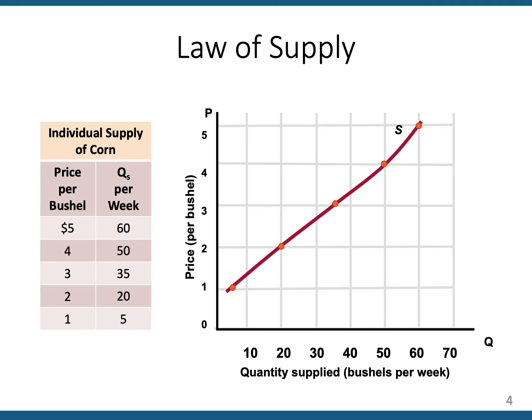So here is, on the left, a table of values — that is a supply schedule. This is the same market for corn that we discussed earlier, except this is one individual supplier, one seller of corn in this market. Think of this as maybe being the market for corn in downtown Nanticoke at the farmer's market. If the market price happens to be $3, this one supplier will bring 35 bushels to market. If the price were to rise to $4, this one seller would bring 50 bushels to market — so that's an increase, which is the law of supply.